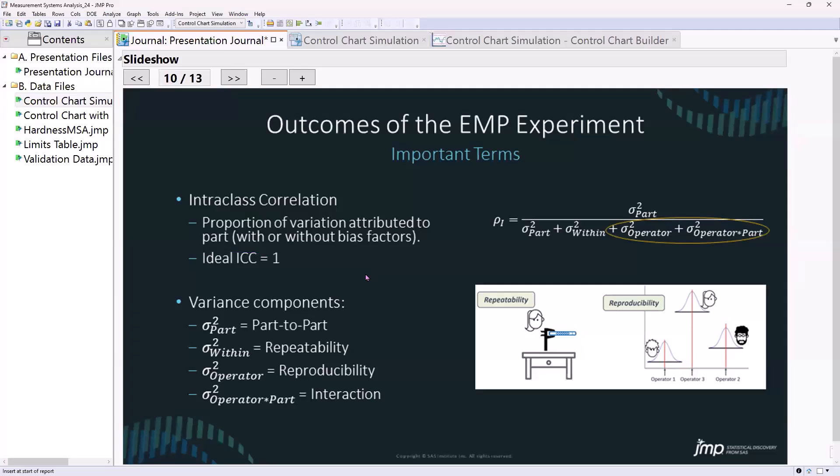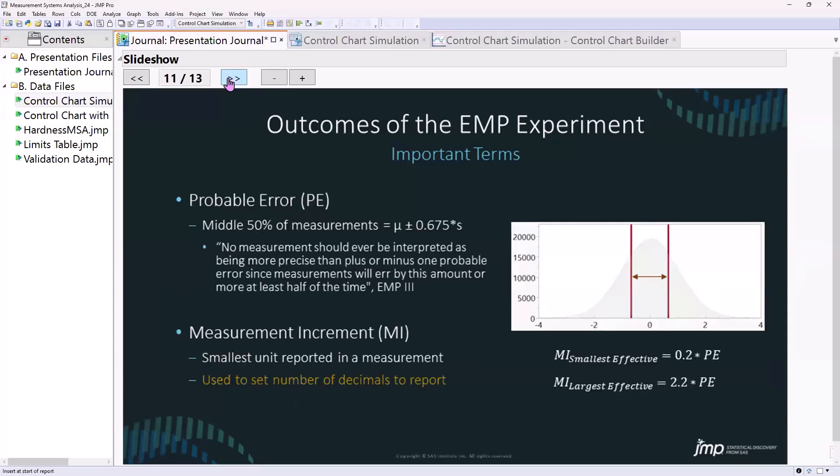Fundamentally, all measurement systems analyses are variance components analyses. The figures of merit, like percent R&R and intraclass correlation, those are just things we get out of it. Fundamentally, this is the meat of what we're doing in a measurement systems analysis.